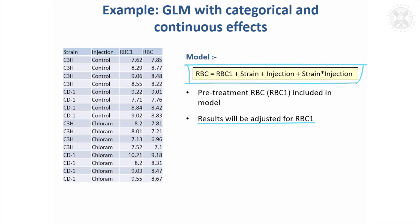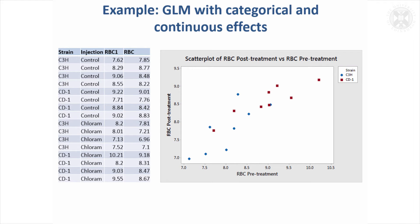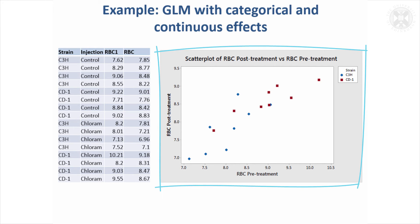The effect of including pre-treatment RBC is that it adjusts the results for any differences in red blood cell counts between groups before treatment. Going back to the plot, you can see that the blue dots tend to be lower for both pre-treatment and post-treatment red blood cell count compared to the red squares on average. So there does appear to be a difference between the groups already before treatment.